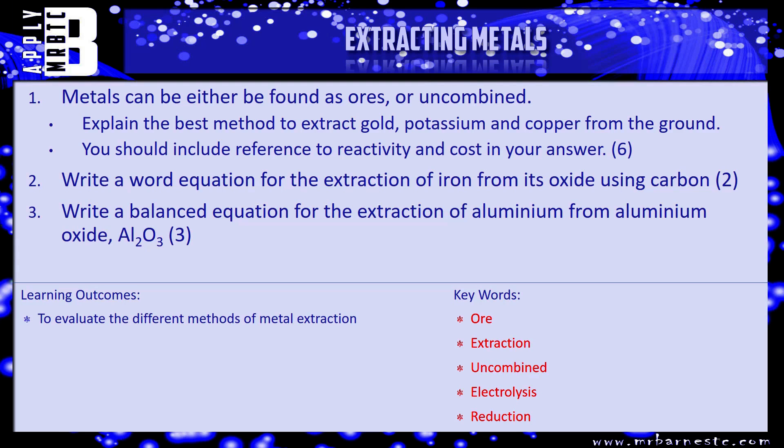We've got a few questions for you to have a go at. The first one is a nice six marker which says, metals can either be found as ores or uncombined. Explain the best method to extract gold, potassium, and copper from the ground. Your answer should include reference to reactivity and cost. Think to yourself, which were the ones we said were uncombined? Which ones in group one, two, or three? They're the ones you use electrolysis. Which ones are the transition metals? That's the one where you reduce and heat with carbon. Look on your periodic table, find that out, and have a go at answering the question.